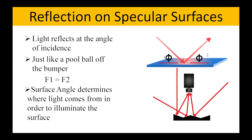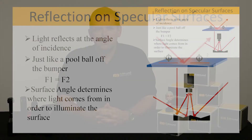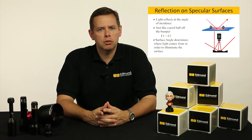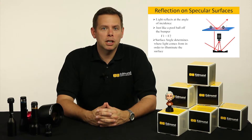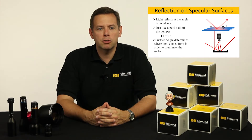Let's start with the simplest example. If we take light — a laser, something of a collimated sort of variety — and shine it onto a mirror, we're going to get the angle of incidence equal the angle of reflection.